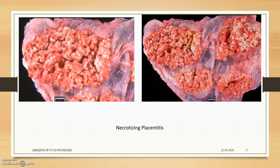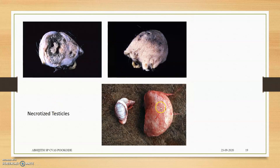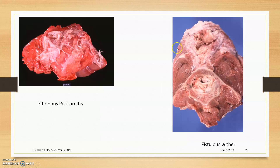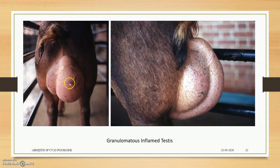Lesions include pyogranulomatous foci, acute diffuse fibrinous pleuritis, small hemorrhages, necrosis, and enlarged granulomatous testicles. There is fibrous tissue proliferation due to granulomatous and fibrinous reaction. Fistulous withers shows small fistulas. There is also fibrinous coating of the lung with pleural adhesions. Anterior uveitis is seen in dogs. Granulomatous inflammation in the testis causes significant enlargement.